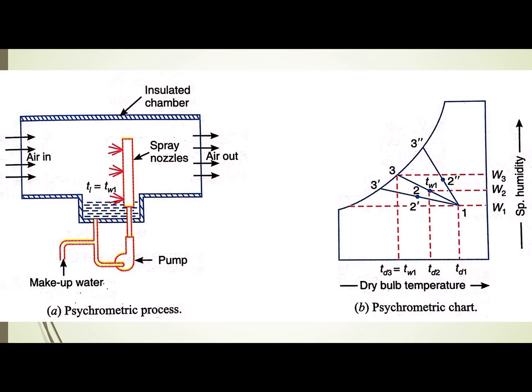The 1-2 process follows a constant enthalpy line on the psychrometric chart. In this process, we spray cold water into the air to achieve cooling and humidification.